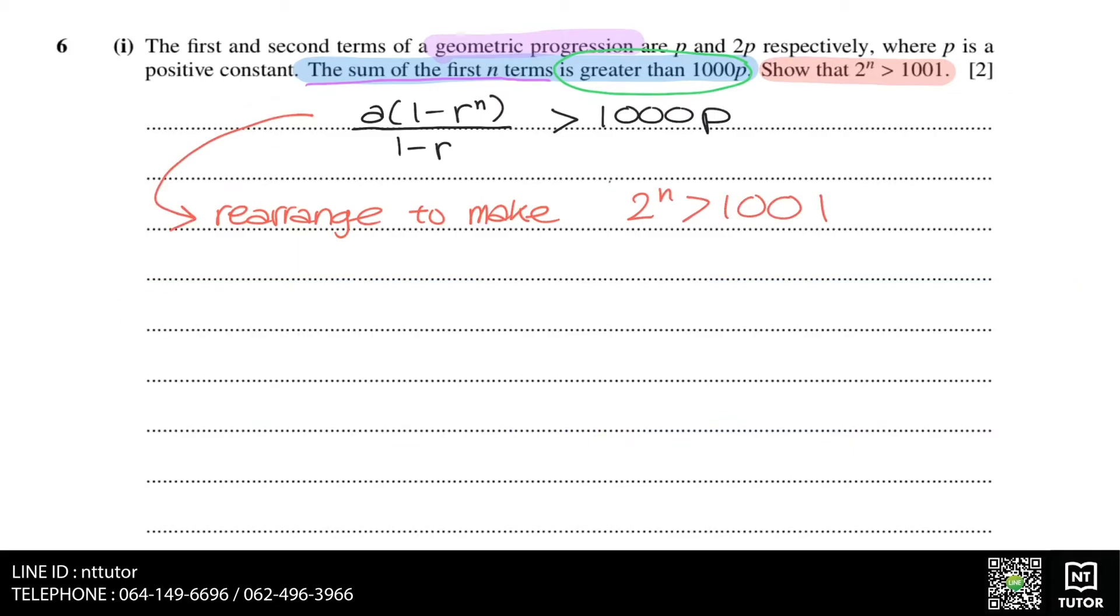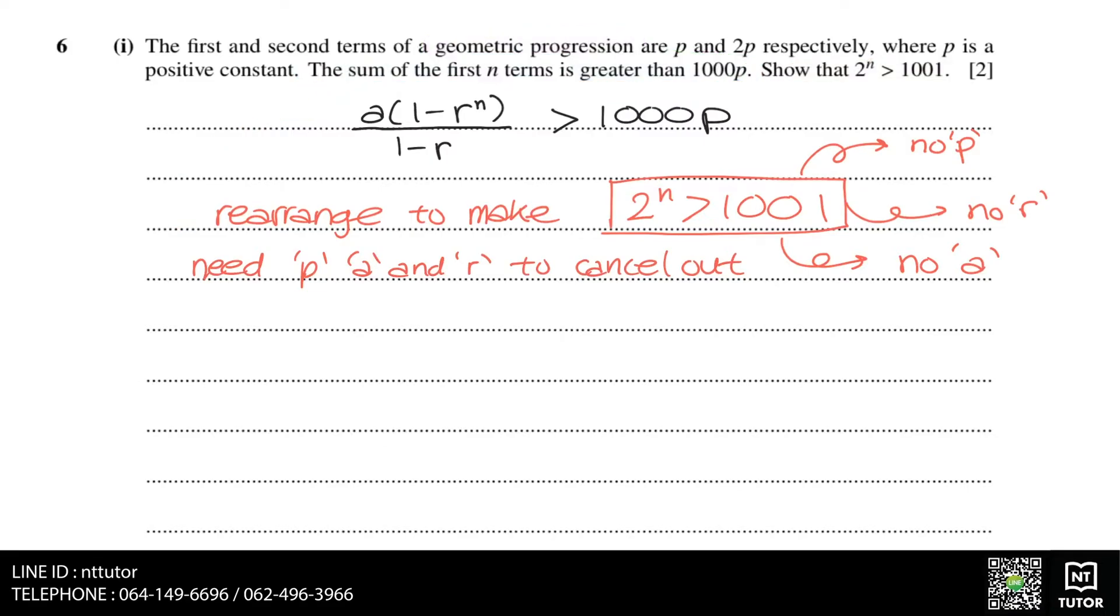But if you compare the two expressions, the expression that we want does not have a p, does not have an r, and does not have an a. This means we need to somehow cancel out the p, the a, and the r. We can do this by writing a and r in terms of p and hope that it will eventually cancel out with the other p.